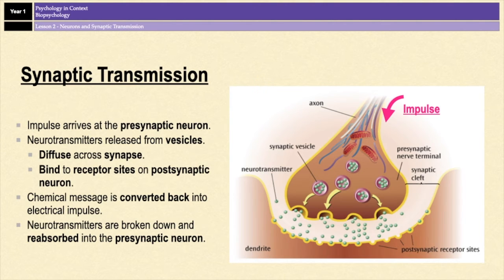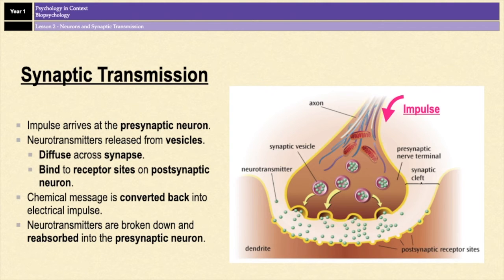It is worth mentioning — because it came up in an exam not too long ago — that the direction of travel can only be one way. For the purposes of psychology, this is because the neurotransmitters are released from the presynaptic neuron and received at the post-synaptic receptor sites. There are no receptors on the presynaptic neuron and no vesicles full of neurotransmitters on the post-synaptic neuron, so it can only go in one direction.